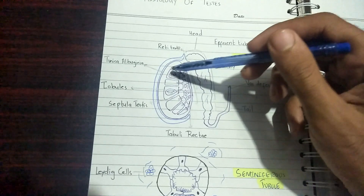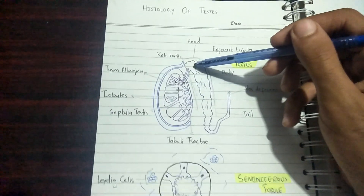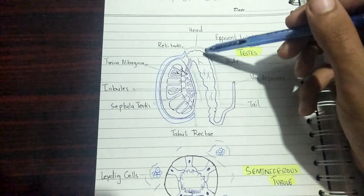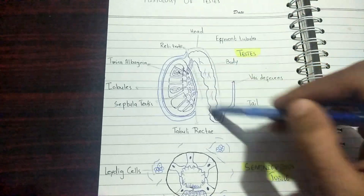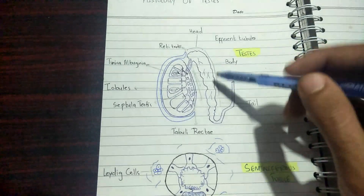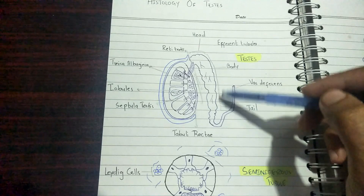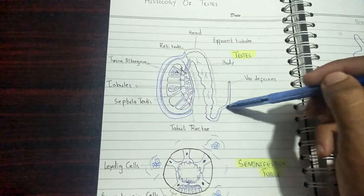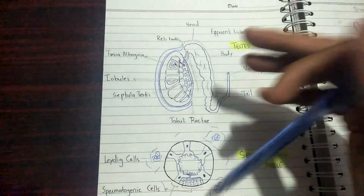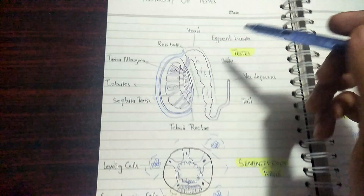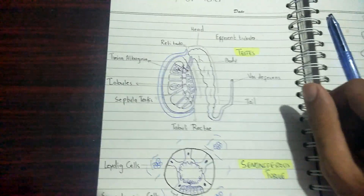The connection between the rete testis and the epididymis is formed by efferent ductules, which transport sperms from the rete testis to the epididymis. The epididymis is divided into three parts: the head, the body, and the tail. From there, sperms are transported through an elongated, thick muscular tube known as the vas deferens, which leads to other structures outside the scope of testes histology.